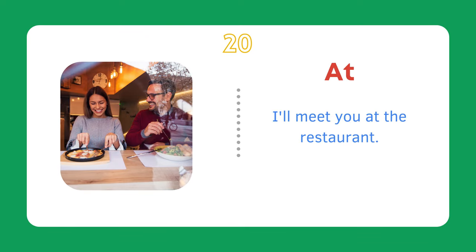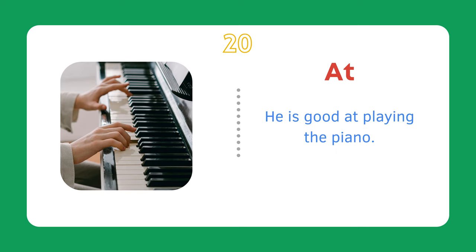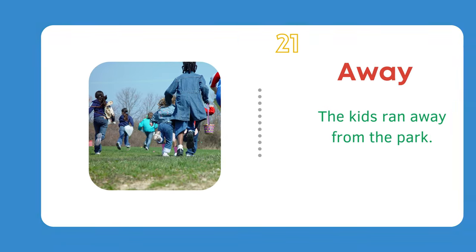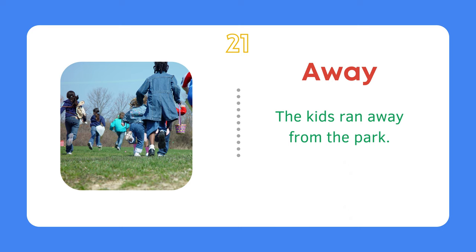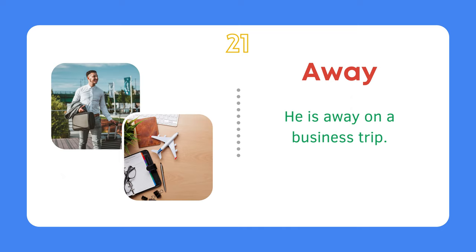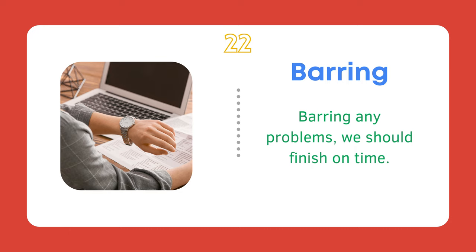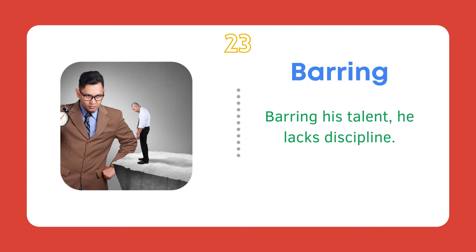At. I'll meet you at the restaurant. He is good at playing the piano. Away. The kids ran away from the park. He is away on a business trip. Barring. Barring any problems, we should finish on time. Barring his talent, he lacks discipline.